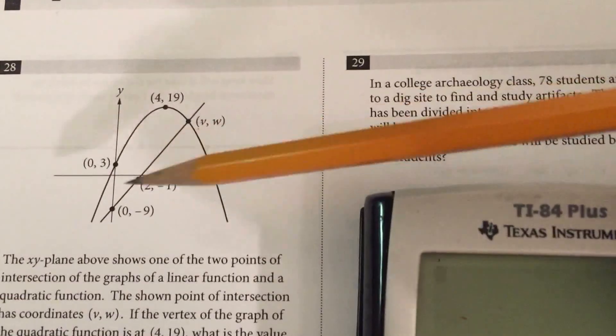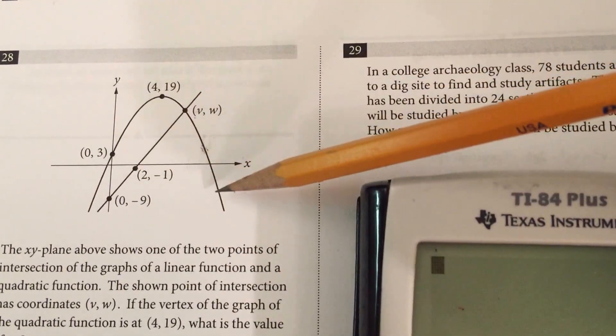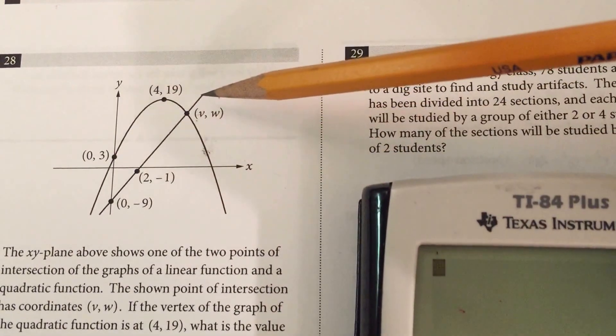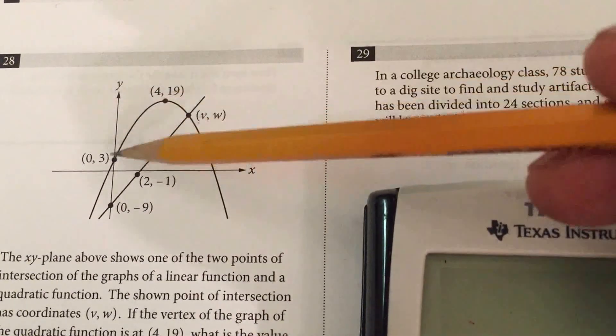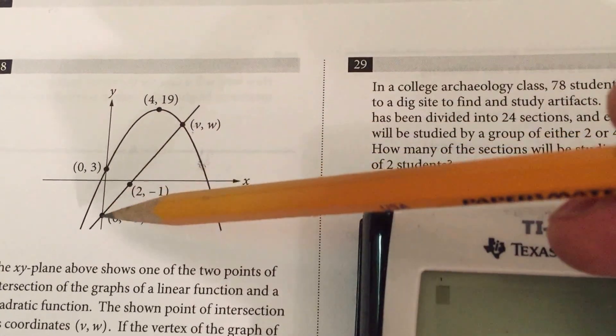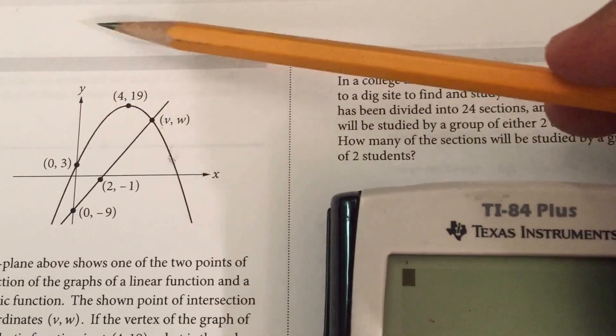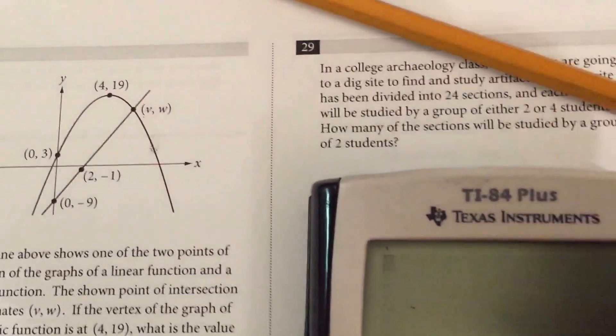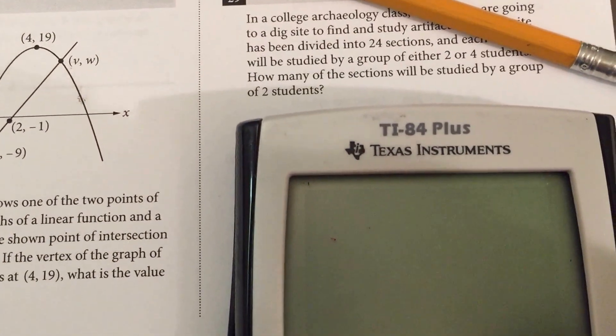Basically what we have here is we have an inverted parabola, a quadratic equation. We also have a line and they've given us two points on the quadratic and they've also given us two points on the line. If I were solving this problem, this is exactly how I would attack it if I saw something like this on the PSAT.